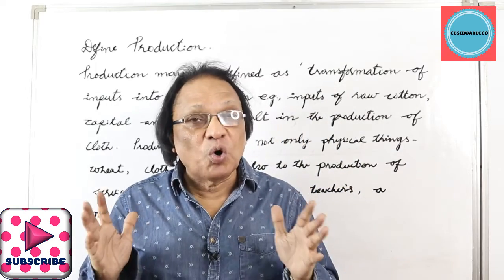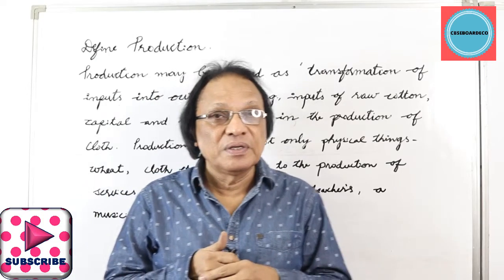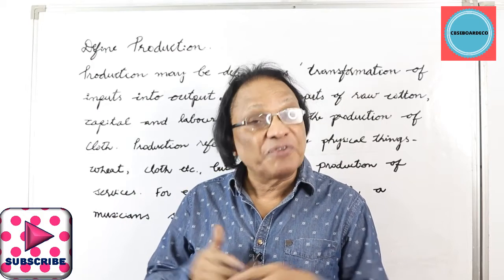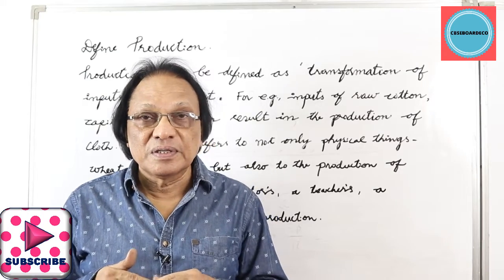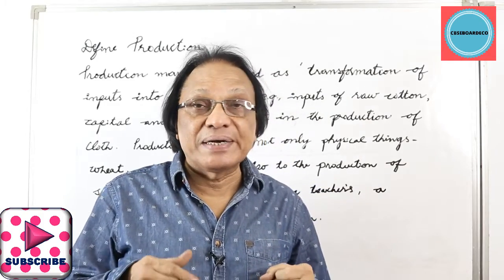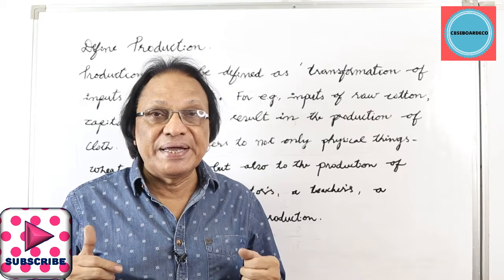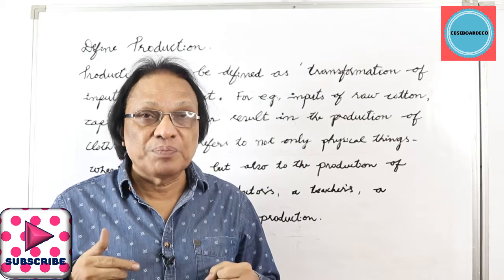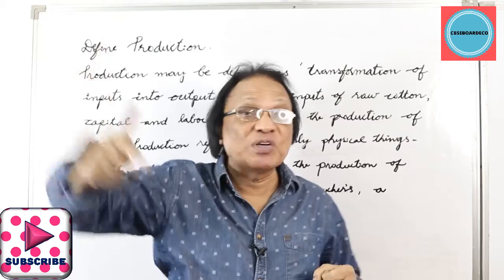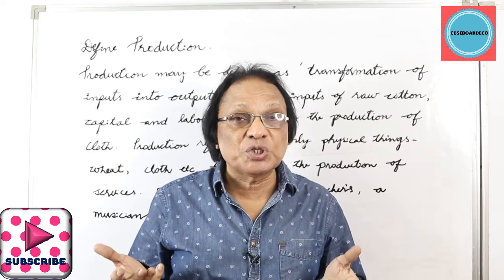Today we discuss one more new unit in microeconomics: producer behavior and supply. The first unit was introduction, the second unit was demand, elasticity of demand, consumer equilibrium, consumer behavior, and demand. Now the third unit is producer behavior and supply.